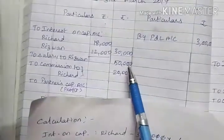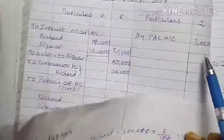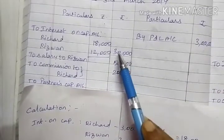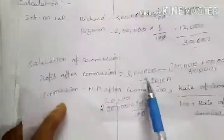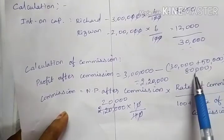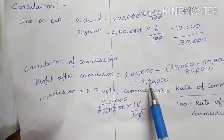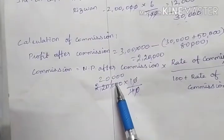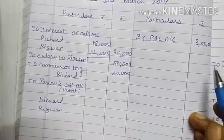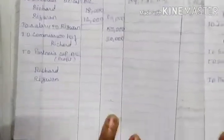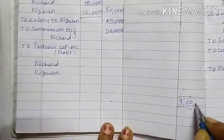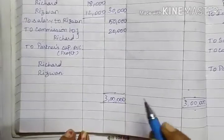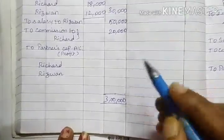So commission after charging commission: total profit Rs. 3,00,000. Interest on capital Rs. 30,000 plus salary Rs. 50,000 = Rs. 80,000. Rs. 3,00,000 minus Rs. 80,000 = Rs. 2,00,000. Rate of commission 10 by 110, calculated commission Rs. 20,000. Credit side total: Rs. 3,00,000. Debit side total: Rs. 1,00,000. Balance: Rs. 3,00,000 minus Rs. 1,00,000 = Rs. 2,00,000.